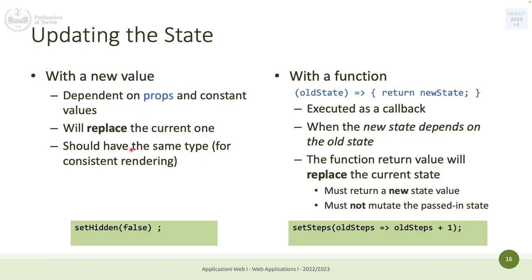You can update state in two ways: with a new value, or with a function. Updating with a new value replaces the current value — so if hidden is true, calling setHidden(false) makes hidden false. It should have the same type, so if the state is a boolean, update it with a boolean. This is the normal way when the new state does not depend on the current value of the state.